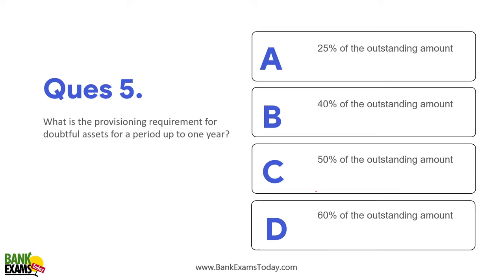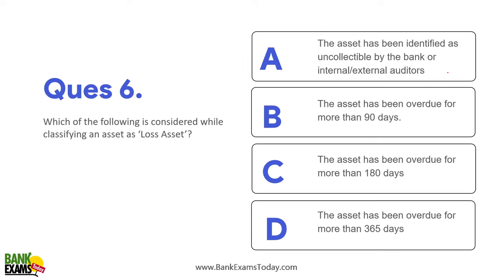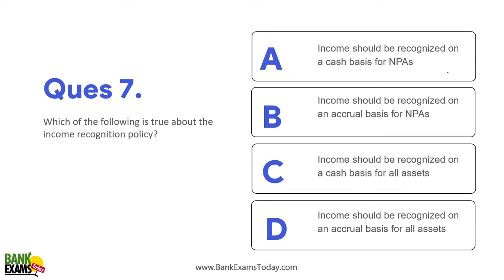Question five: What is the provisioning requirement for doubtful assets for a period up to one year? As covered in the provisioning tables, it is 25%. Question six: What is considered while classifying an asset as a loss asset? A loss asset is one identified as uncollectable by the bank or external/internal auditors — 100% provisioning is required.